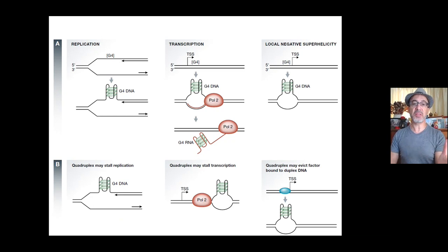Even G4 RNA may form in the transcript of a gene carrying a G4 motif in the coding strand. As you can see, G4 DNA may stall replication or transcription or prevent the binding of a specific transcription factor. So that way, you can see very well the role of G4 DNA in the different processes and equally in human disease.